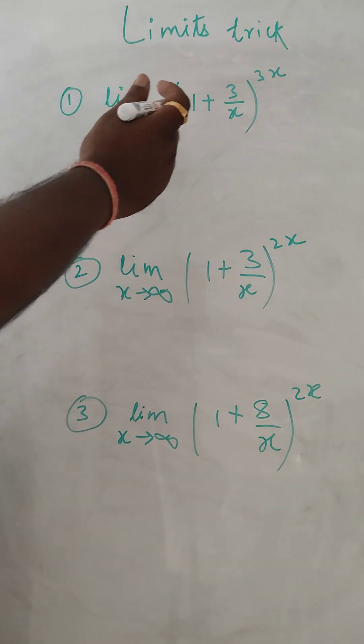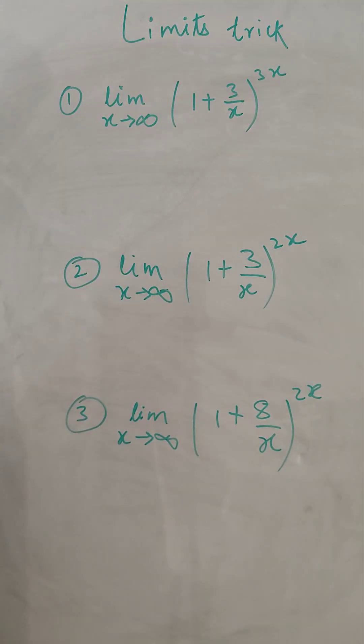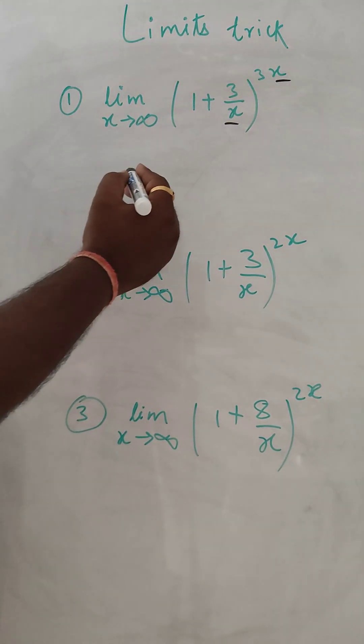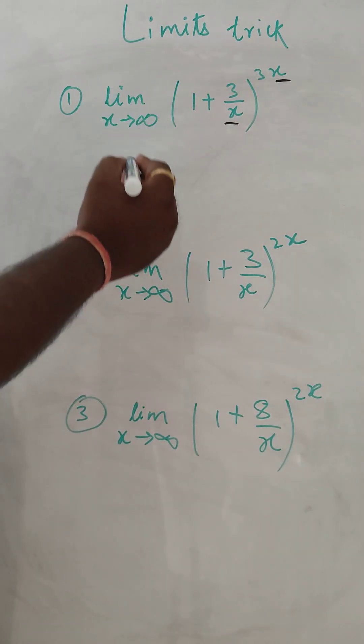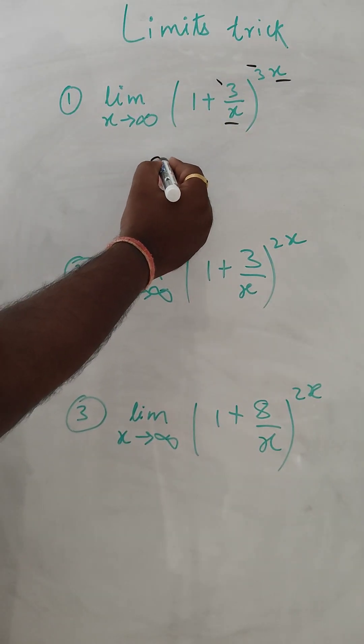If the limit x tends to infinity of 1 plus 3/x to the power 3x - so when this x and this x are the same, the answer will be e to the power of this 3 multiplied by this 3, which means 9.